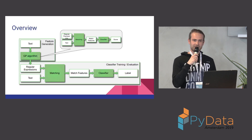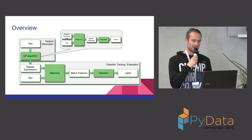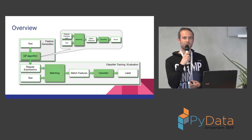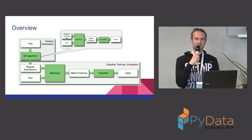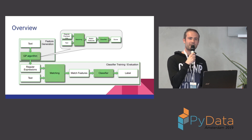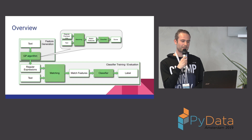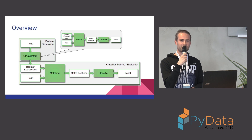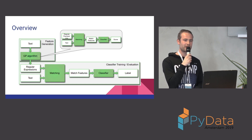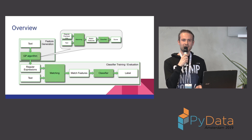This is the overview of the algorithm. We start by providing text to the genetic programming algorithm, which will then work its magic for a while and give us regular expressions. We then use the regular expressions to match on text, get match features, which we can then use to train a classifier and finally use the classifier to make predictions.